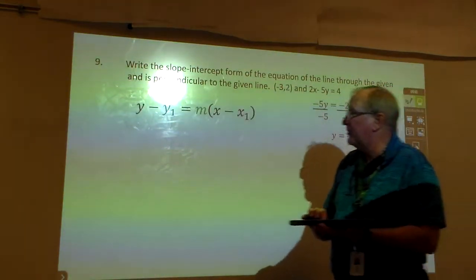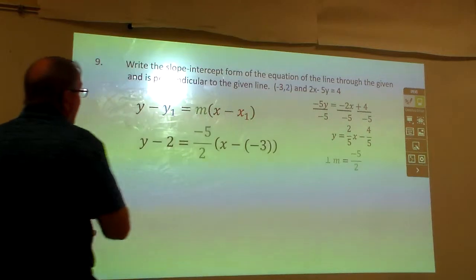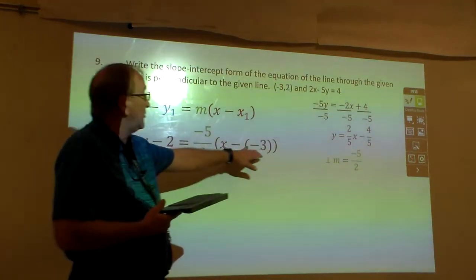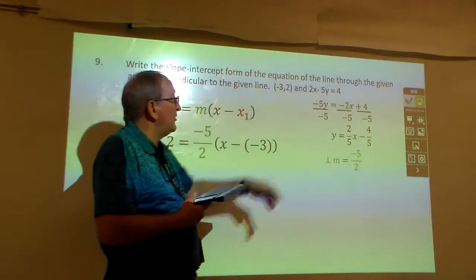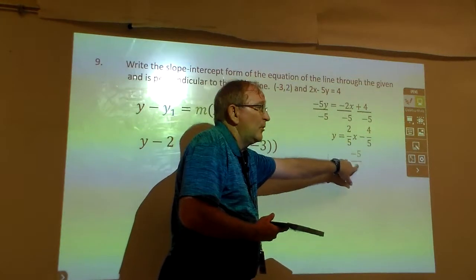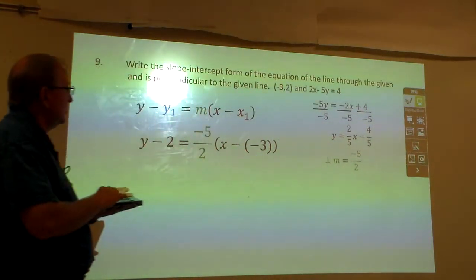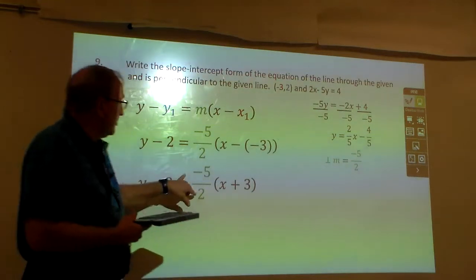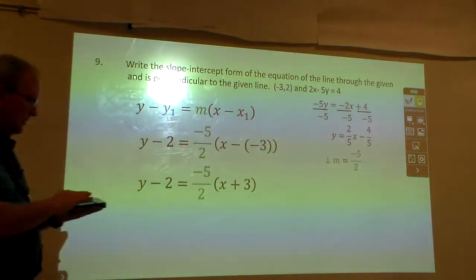So I'm going to come back to my point-slope formula, and I'm going to put that 2 in here, that negative 3. Notice the same point I had before in the previous problem, but now my slope is negative 5 over 2. That's going to be the same as plus 3, negative 5 times that, over 2.